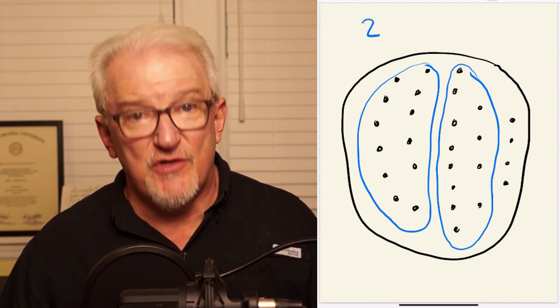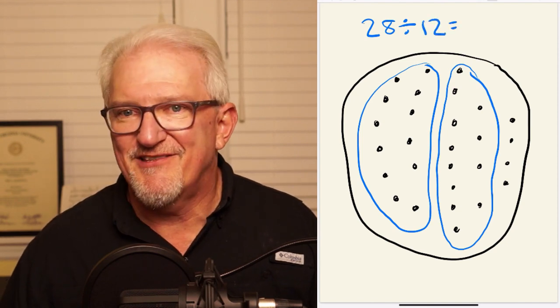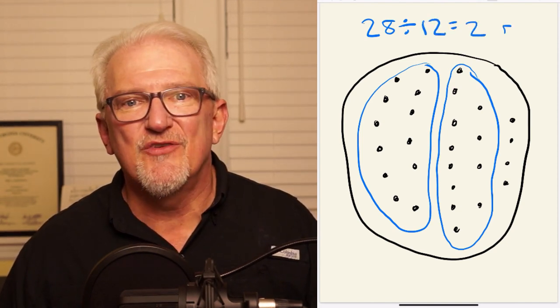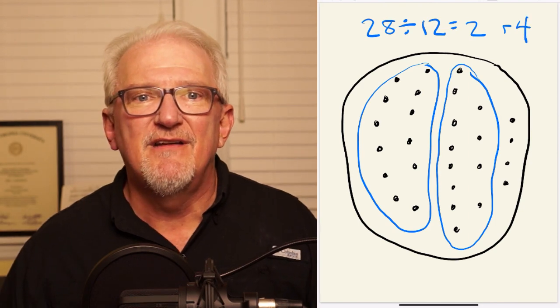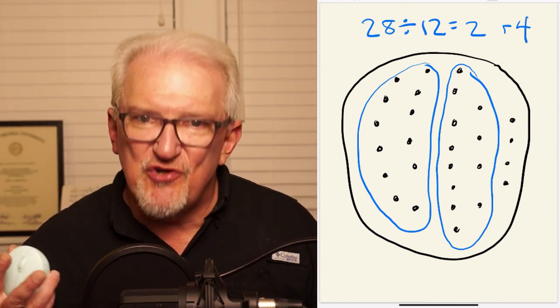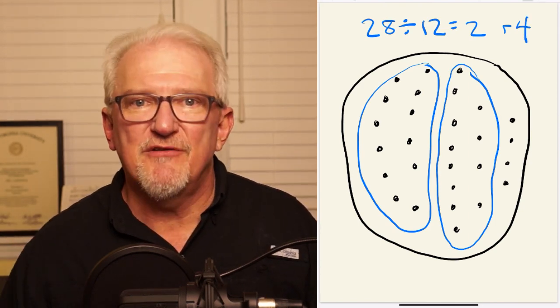We express this by saying that 28 dots divided by 12 is equal to 2 groups of 12 dots with a remainder of 4 dots. In other words, 28 divided by 12 is equal to 2 with a remainder of 4.